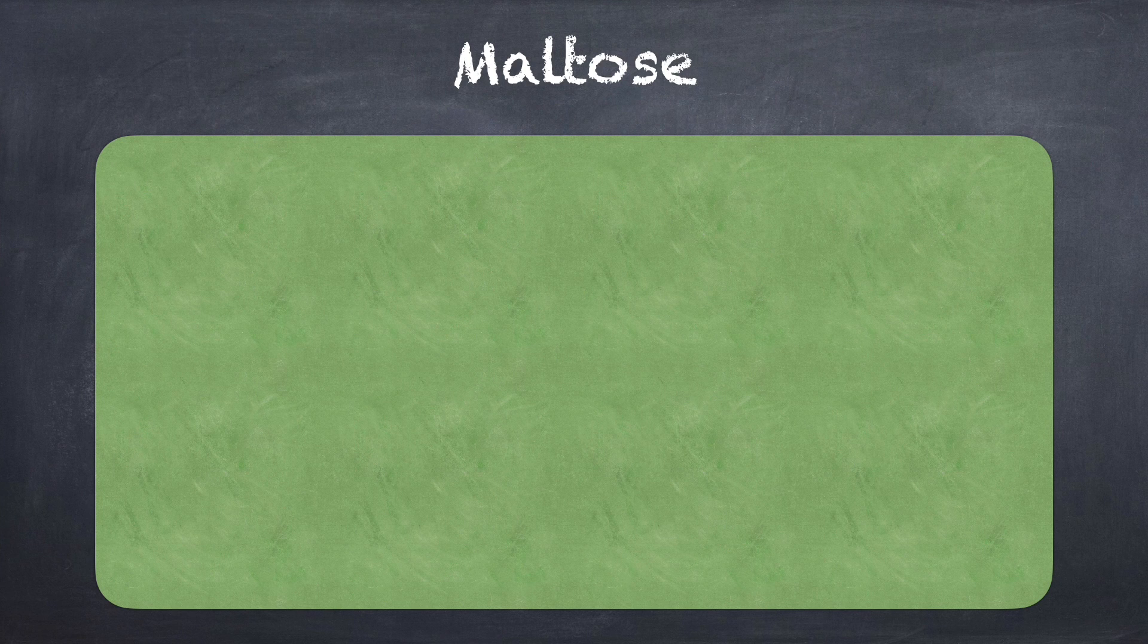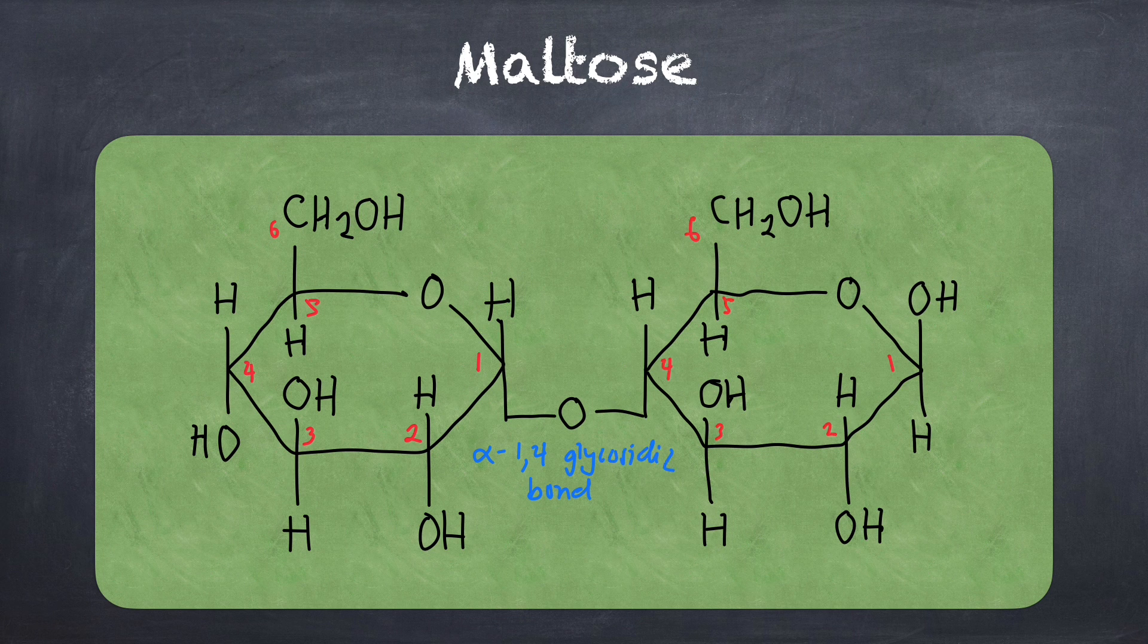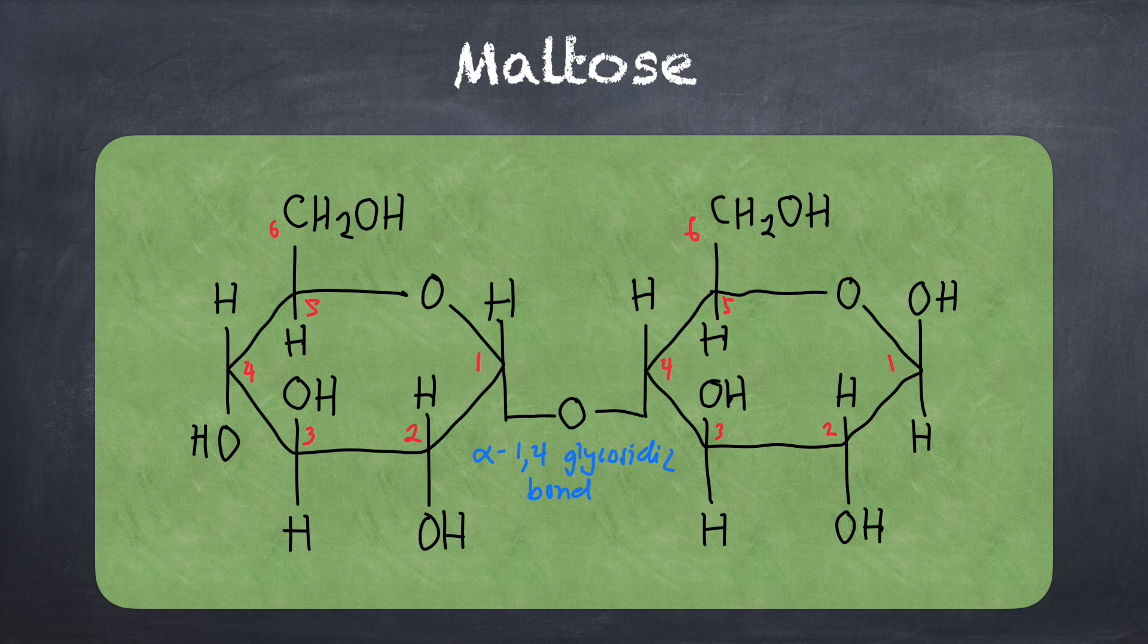This is the structure of maltose, which is a combination of two alpha glucose joined by alpha 1-4 glycosidic bond.